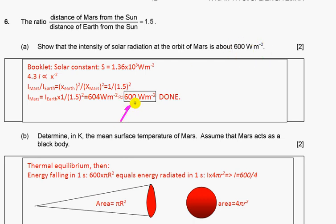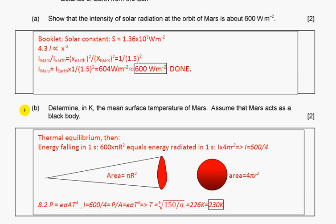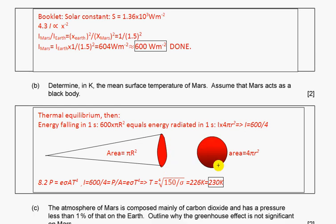Determine in kelvins the mean surface temperature of Mars. Assume that Mars acts as a black body. Because we have equilibrium, energy absorbed equals energy radiated. Energy falling in one second is 600πr² equals energy radiated in one second. Intensity for 4πr² squared, so actually here intensity of radiation should be four times less.